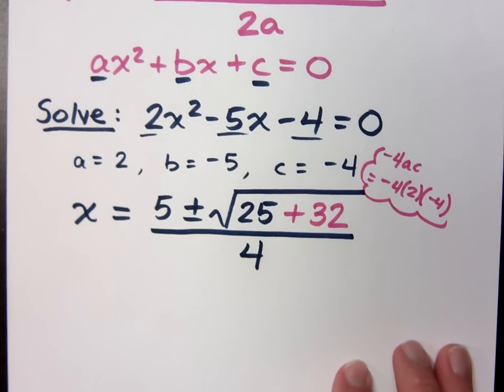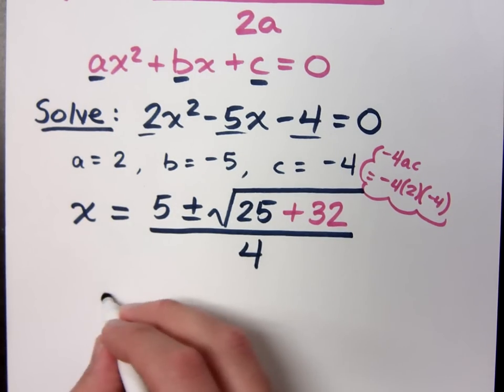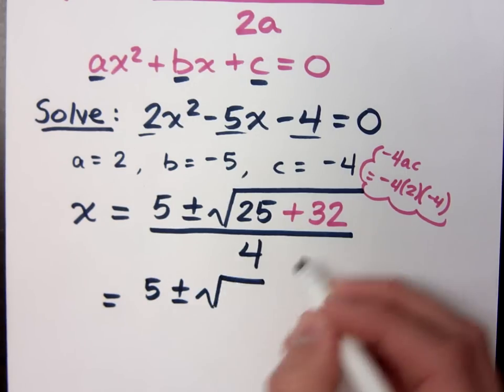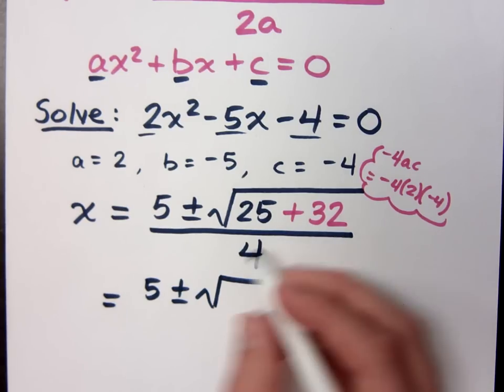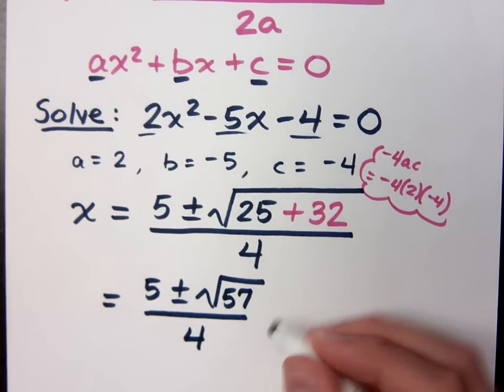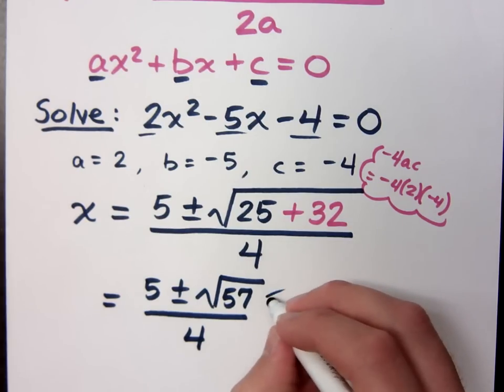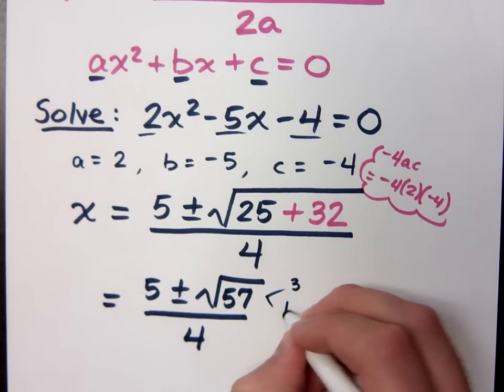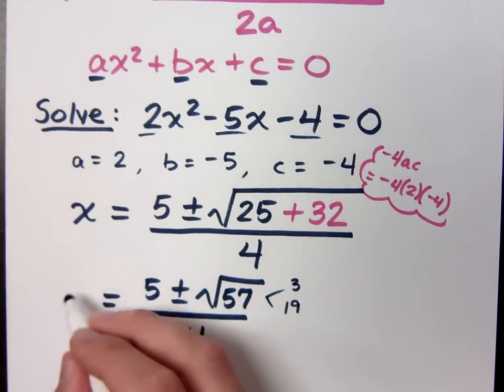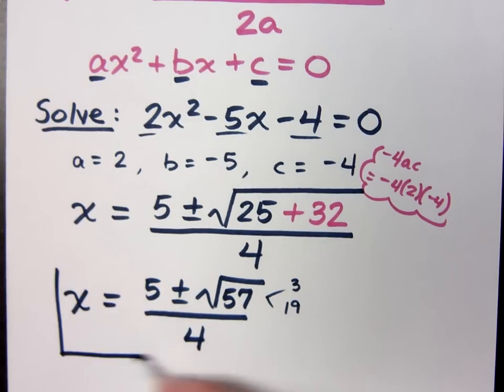Well, the next thing we need to do is to simplify this expression. So we have 5 plus or minus the square root, 25 plus 32 gives us 57. This is all over 4. You would try to break this down, if you can, with the radical. The radical breaks down into factors 3 and 19, and there's nothing else you can do with that, so that will be your final answer.